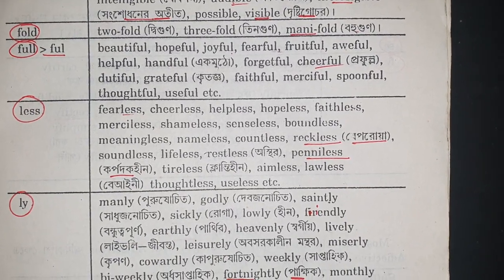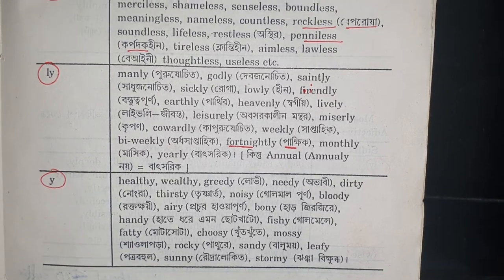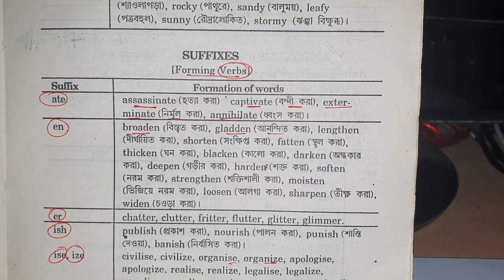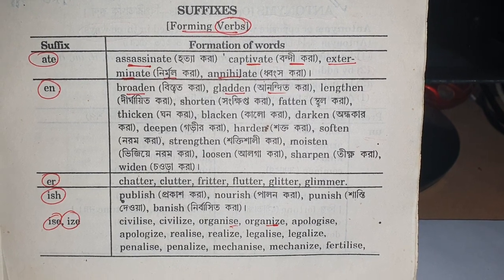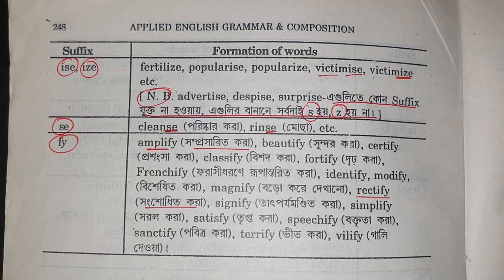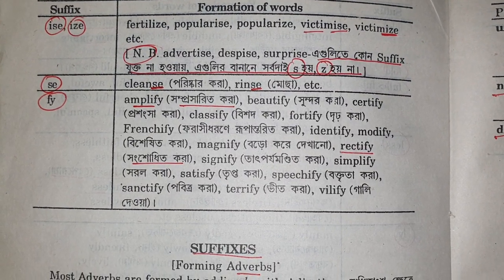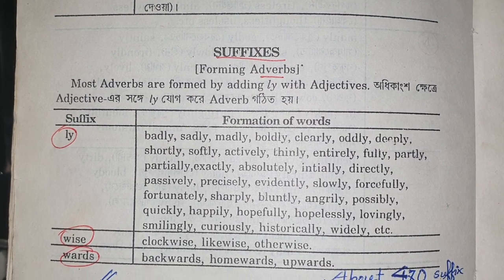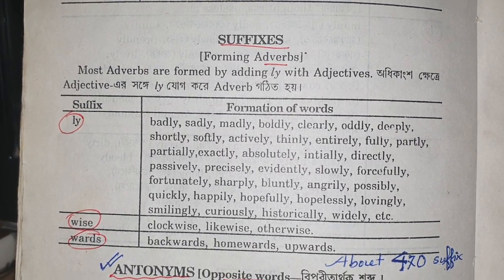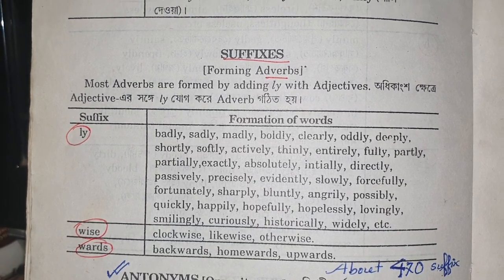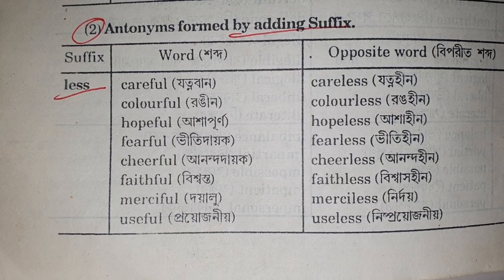Forming verbs: suffix -ate: assassinate, captivate. -en: broaden. -er: chatter, clutter. -ish: publish, nourish. -ize/-ise: civilize, organize, fertilize, popularize. -se: cleanse, rinse. -fy: amplify. Now forming adverbs: suffix -ly: badly, sadly, madly, boldly. -wise: clockwise, likewise, otherwise. -ward/-wards: backwards, upwards. Antonyms formed by adding suffix -less: careful — careless; colorful — colorless; hopeful — hopeless.